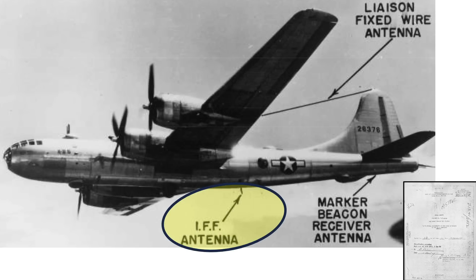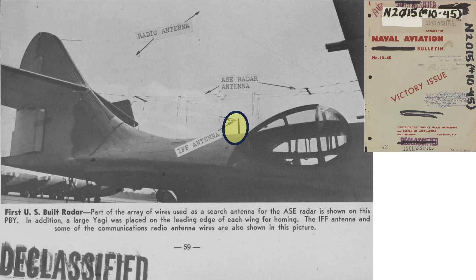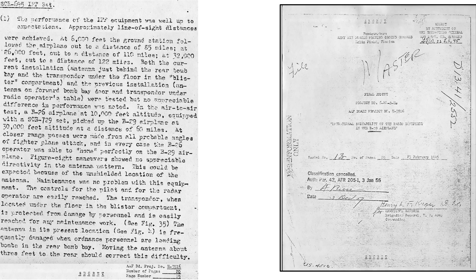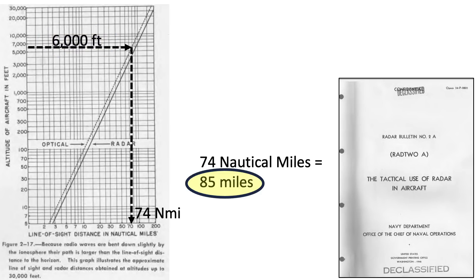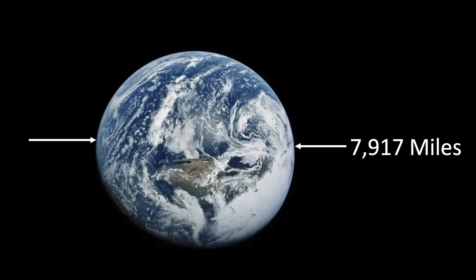The B-29's IFF antenna position is located here from a February 1945 AAF B-29 radio project document, along with the B-17's and PBY's IFF antennas from a 1945 Naval Aviation Bulletin document. The B-29's IFF check test results show that IFF signal response ranges are roughly line of sight — at an altitude of 6,000 feet, the B-29's IFF system was picked up at a distance of 85 miles. The line-of-sight range chart has an x-axis of 1 to 200 nautical miles and a y-axis of log altitude from 5 to 30,000 feet; it predicts a 74 nautical mile visual line-of-sight distance from 6,000 feet, equating to 85 miles. This 1946 chart matches expectations of a spherical Earth with a diameter of around 7,917 miles.